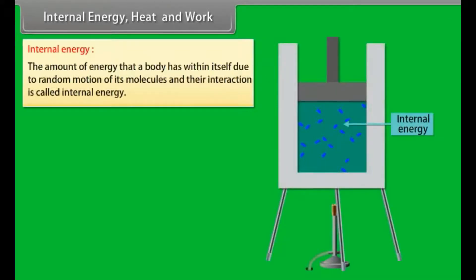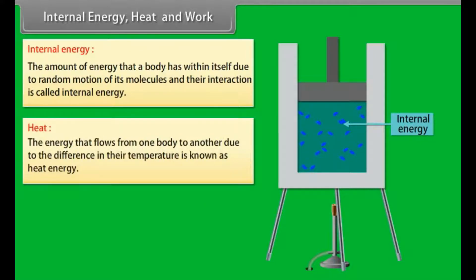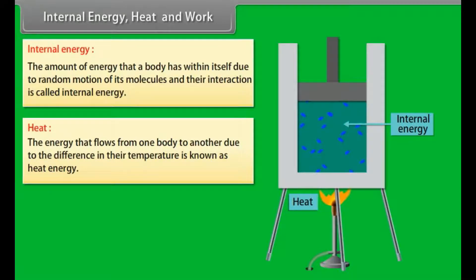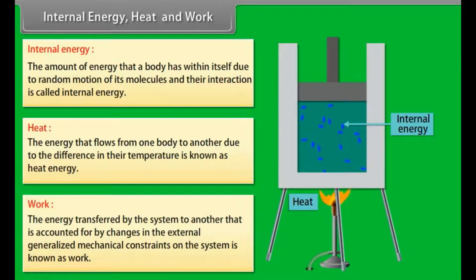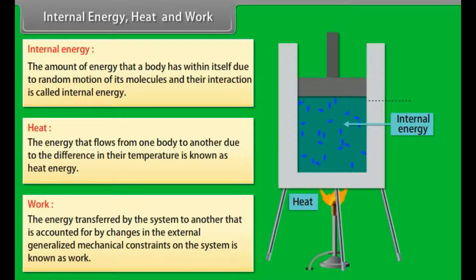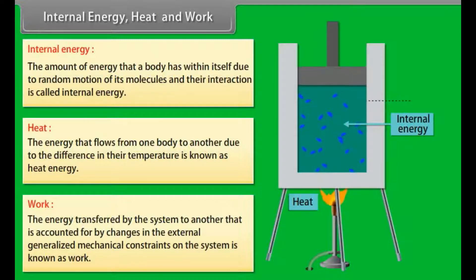The amount of energy that a body has within itself due to random motion of its molecules and their interaction is called internal energy. The energy that flows from one body to another due to the difference in their temperature is known as heat energy. The energy transferred by the system to another, accounted for by changes in the external generalized mechanical constraints on the system, is known as work.